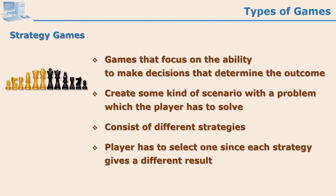The other type is strategy games — games that focus on the ability to make decisions that determine the outcome. Outcomes are already decided, but to reach that goal the learner needs to take wise decisions. A scenario is created and a problem is presented. The learner goes on solving that problem, taking decisions and using strategy. Since each strategy gives a different result, for every decision a particular result is always decided. Designing this kind of strategy game is indeed challenging.